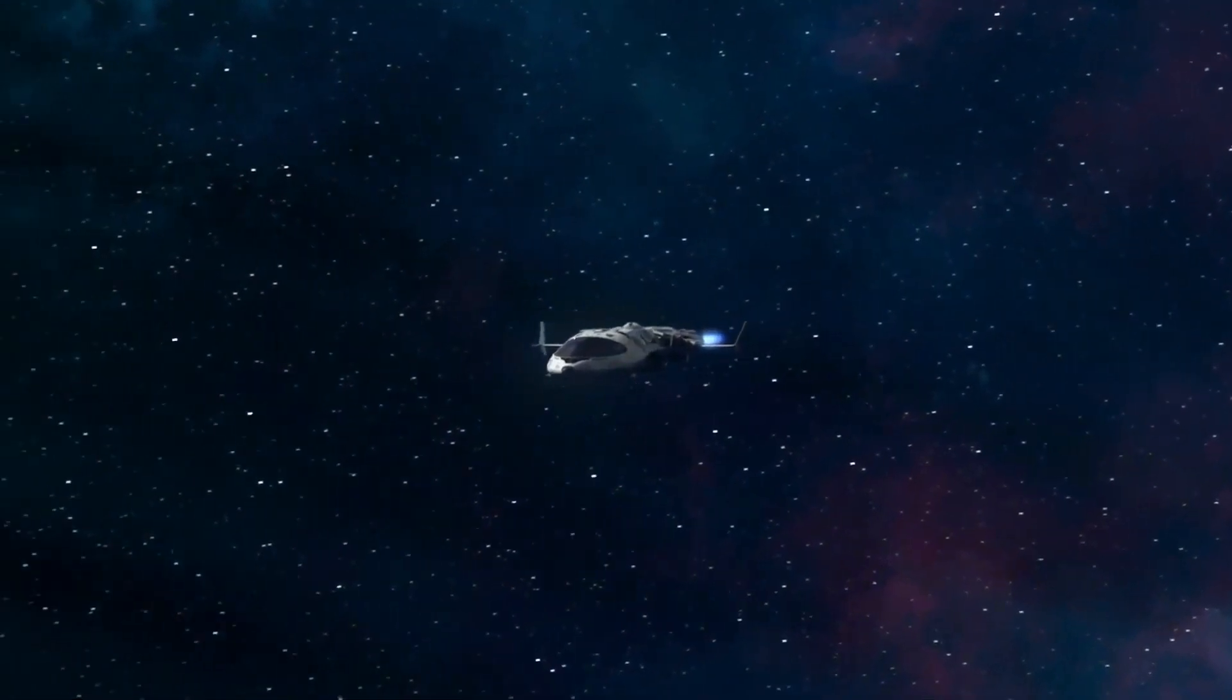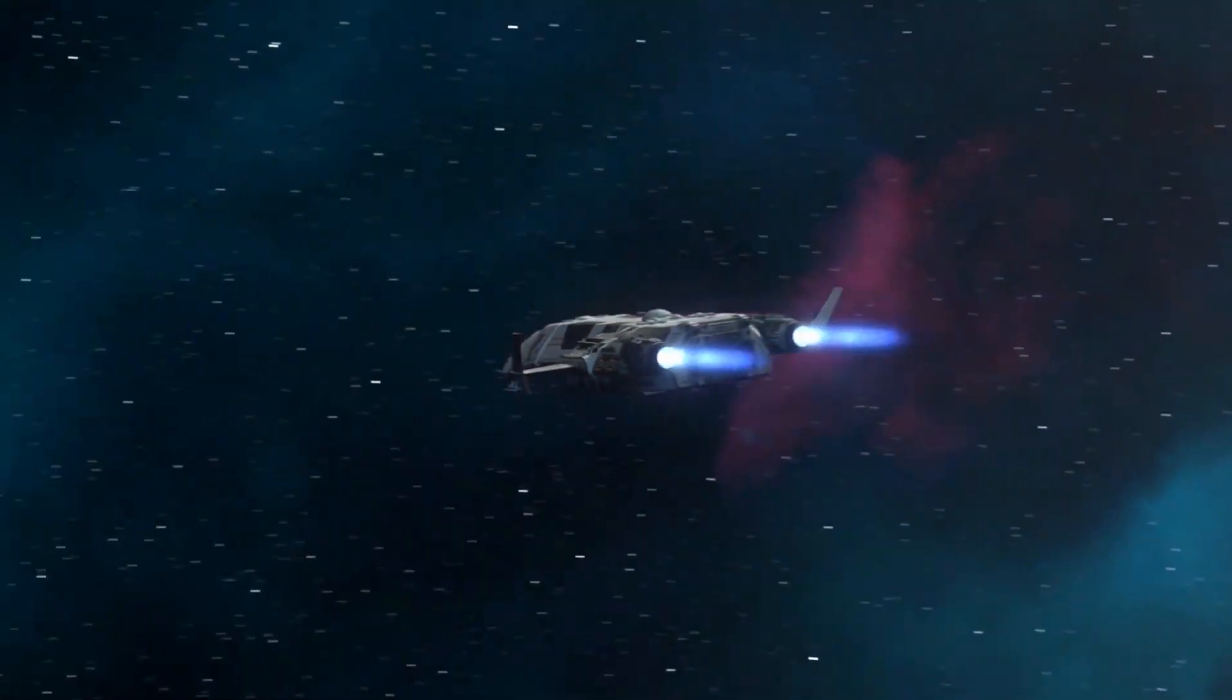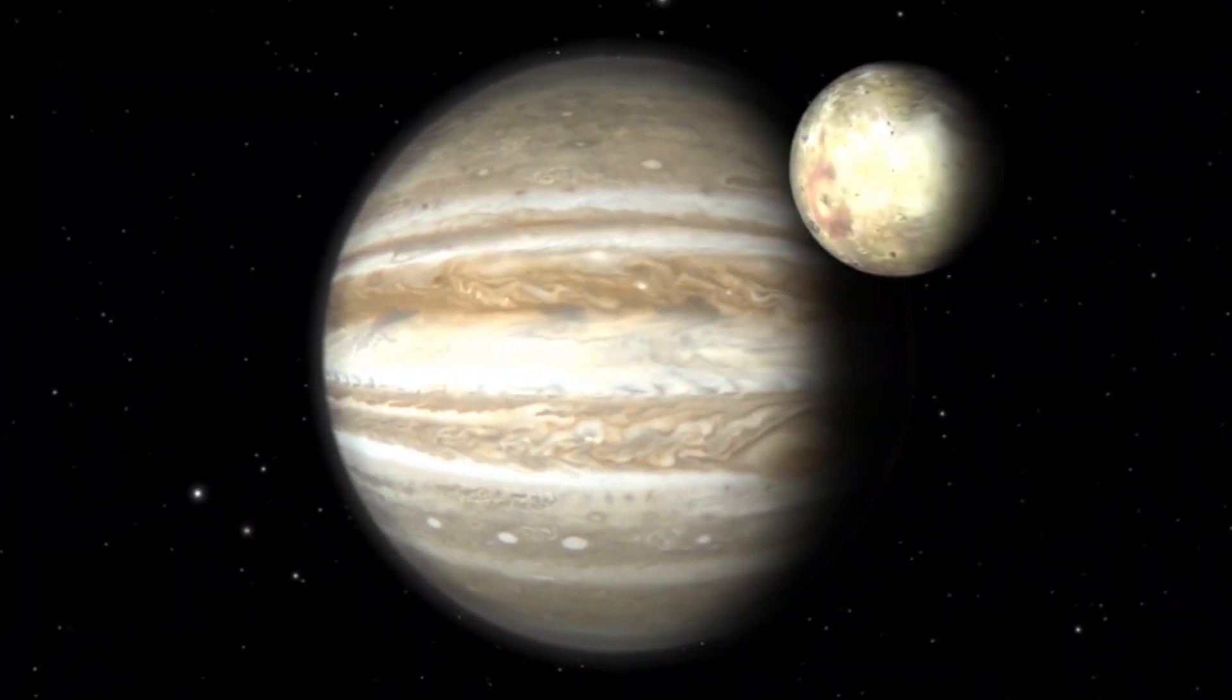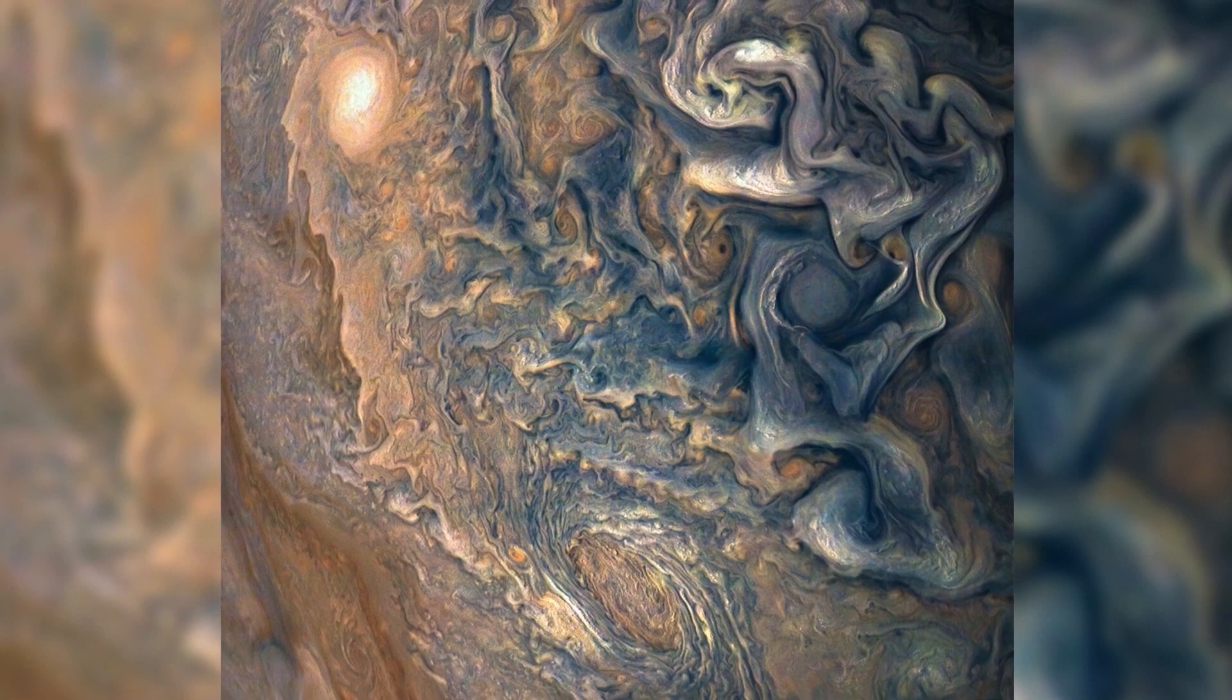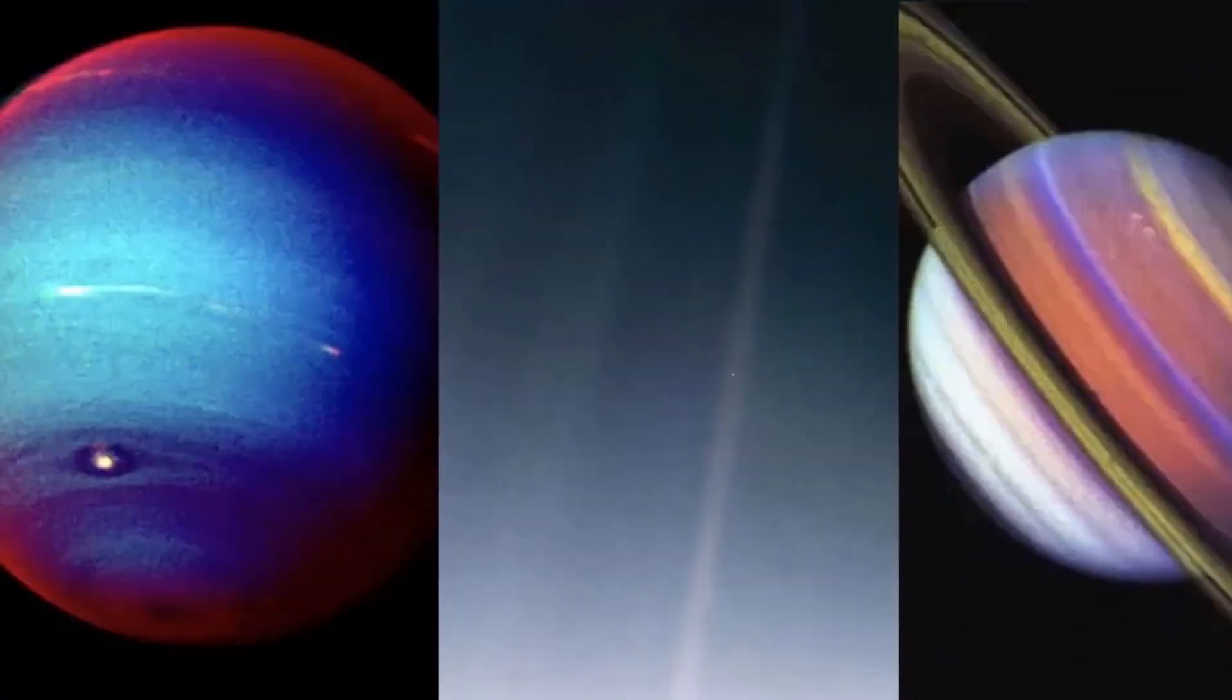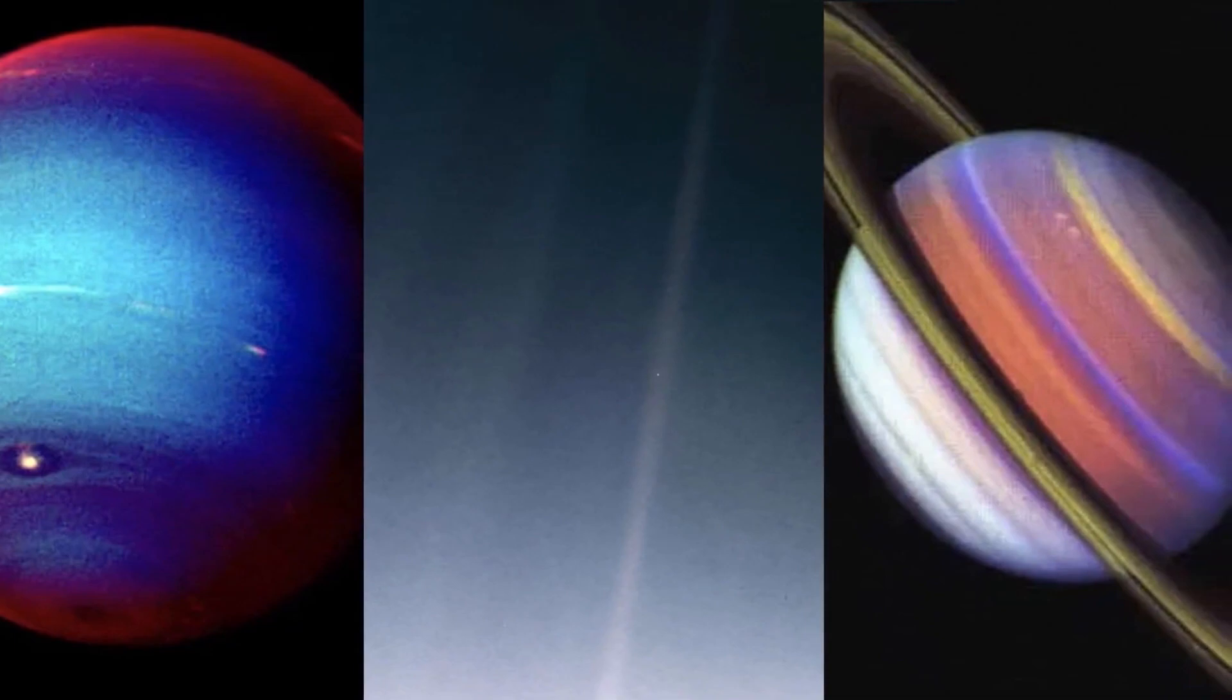However, this Voyager's journey has discovered terrifying new data that has baffled the world. It has sent scary data back to the Earth. Numerous moons on both Jupiter and Saturn have been discovered. Rings around Jupiter have been photographed. Evidence of life in the form of water and liquid has been discovered. The discovery of volcanoes has terrified us.